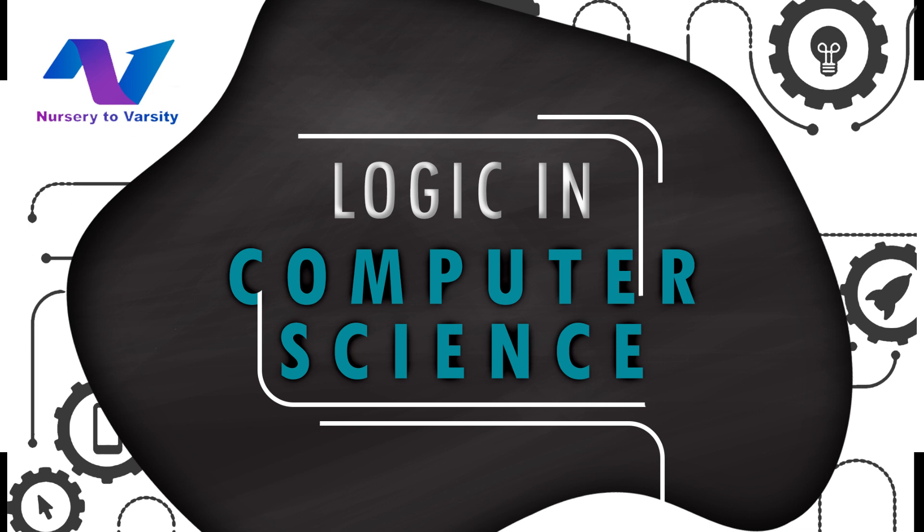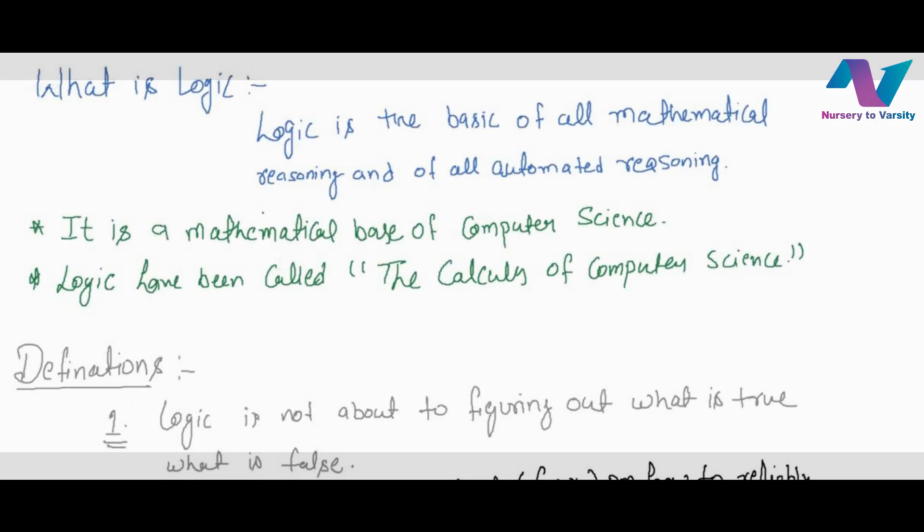So let's start today's topic. First we see the common assumptions about logic. The logic is a basic of all mathematical reasoning and of all automated reasoning. It is the mathematical base of computer science and logic have been called the calculus of computer science. These three are the basic assumptions about the logic related to computer science.